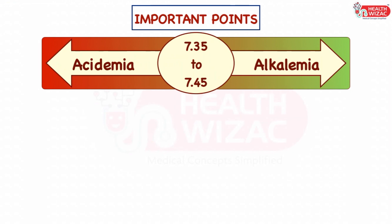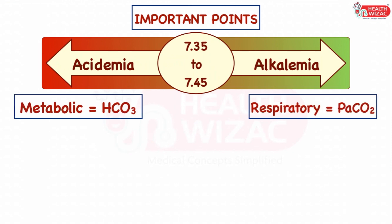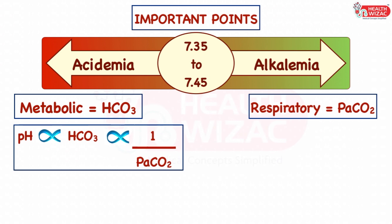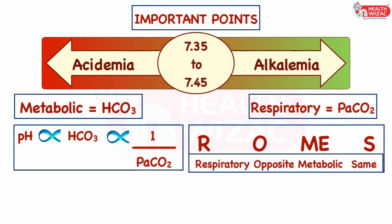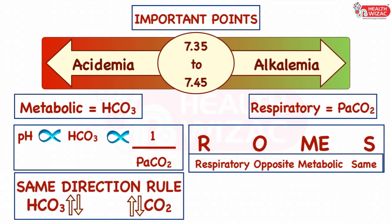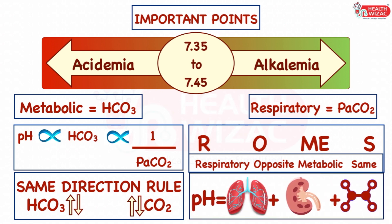Some important points to remember: Acidemia is pH less than 7.35 and alkalemia is pH more than 7.45. For metabolic disorders, check bicarbonate; for respiratory, check PaCO2 levels. pH is directly proportional to bicarbonate and inversely proportional to PaCO2. This can be remembered with the mnemonic ROMS — Respiratory Opposite, Metabolic Same. Compensation always happens in the same direction: rise in bicarbonate is compensated by rise in PaCO2, and fall in bicarbonate is compensated by fall in PaCO2. Normal pH is maintained by lungs, kidneys, and buffer systems.